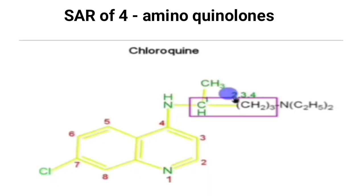Now we are going to see the SAR of 4-aminoquinolines. Examples include chloroquine, hydroxychloroquine, and amodiaquine. Chloroquine has a quinoline nucleus; the seventh carbon has a chlorine, and the fourth carbon has an amino group. That amino group is connected to a butyl chain where the first carbon is connected to a methyl group and the fourth carbon is connected to a diethylamino group.